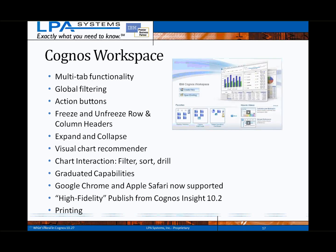New features included with Cognos Workspace include: multi-tab functionality to better organize workspace content and facilitate more functional dashboards; global filtering, which permits filters to be applied across all tabs within a workspace; action buttons to aid in workspace navigation; freeze and unfreeze row and column headers similar to Excel for improved readability when scrolling; expand and collapse as a new way to drill and explore; and a visual chart recommender — a new tool that looks at the data being presented and makes recommendations on which chart types might work best.